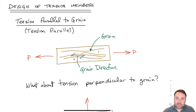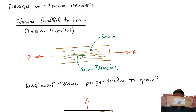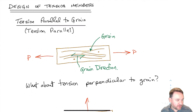Welcome back to Wood Engineering. I'm Jeffrey Rochko from Carleton University and in this video we're going to be talking about design of wood members in tension. The most common way that we want to load wood members in tension, if I have my 2x4 here, is in tension parallel to grain, which as we discussed in the mechanics video is one of the strongest ways to load a piece of wood.